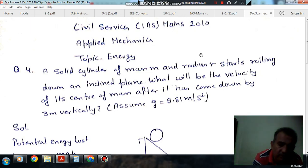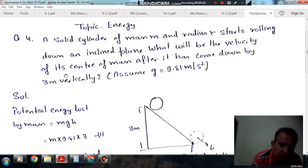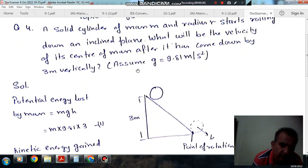Hello, welcome again. We are solving some questions on Applied Mechanics. The topic is Energy, Question 4. A solid cylinder of mass m and radius r starts rolling down an inclined plane. What will be the velocity of its center of mass after it has come down three meters vertically? Assume g equals 9.81 meters per second squared.